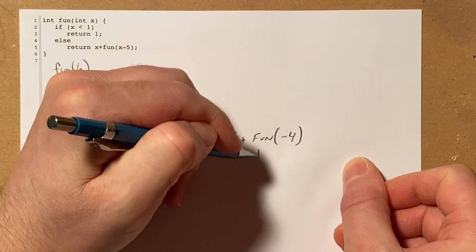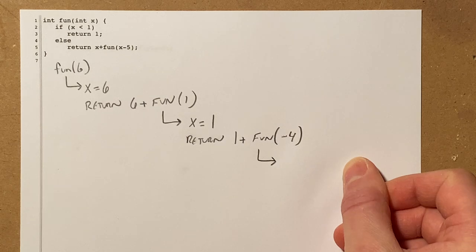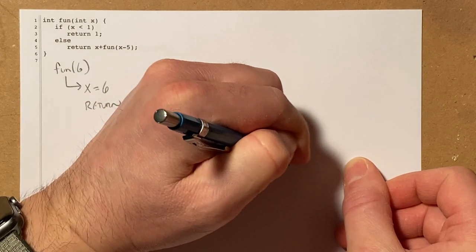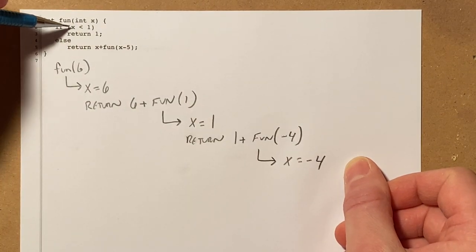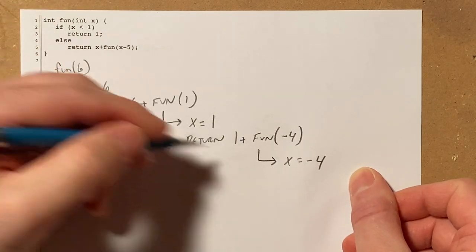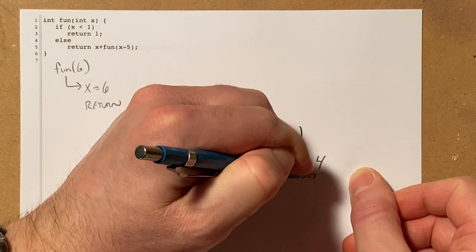Here's another call to fun so I'm going to draw an arrow showing that that's another recursive call. x will equal negative 4. Go back up here to trace, if negative 4 is less than 1, that's true, this is going to return 1.